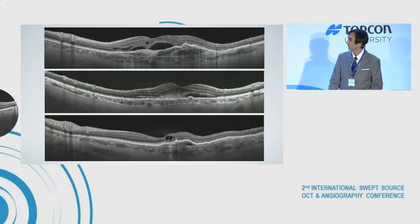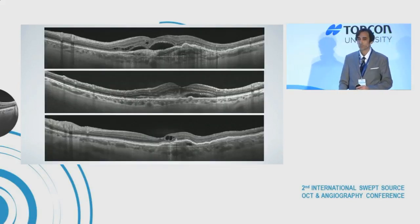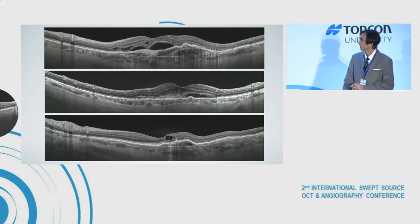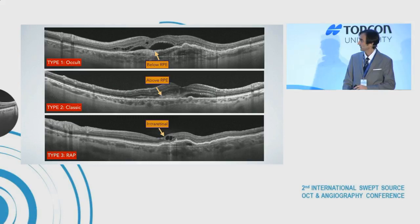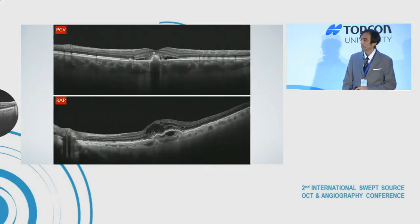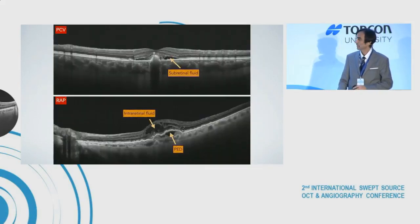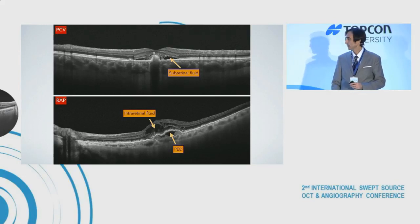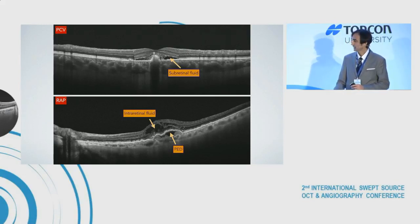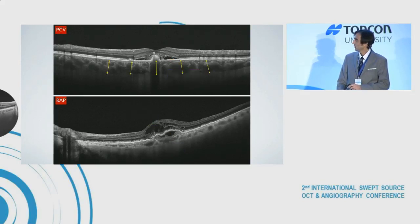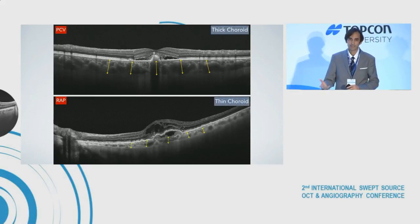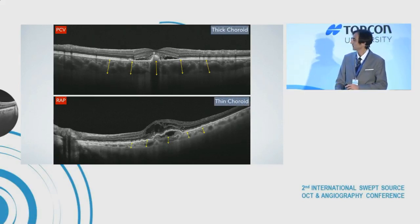With a good common OCT, especially swept source, we can define the type of CNV — it's very well known. We can assess the presence of subretinal fluid, intraretinal fluid, and pigment epithelial detachment. These are the main hallmarks to determine the need for treatment. We can also measure the choroid — in some cases it's thicker, others thinner, which is important as well.